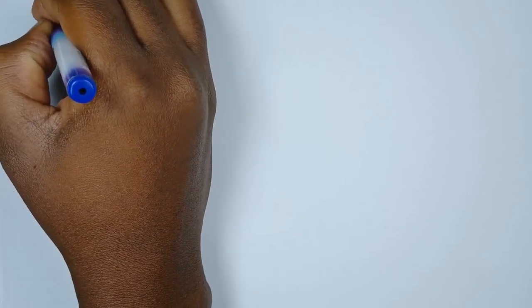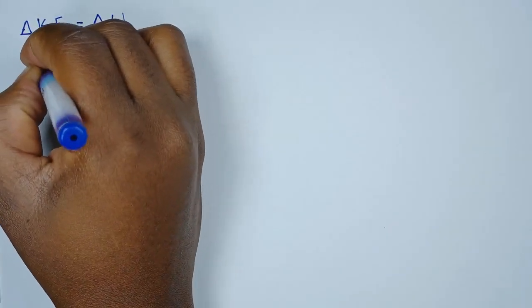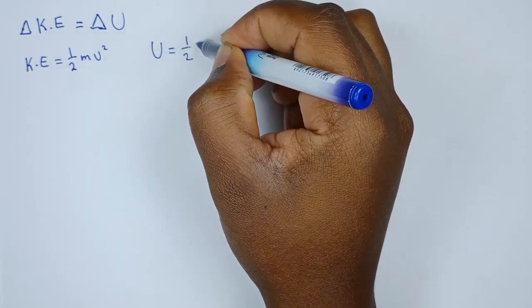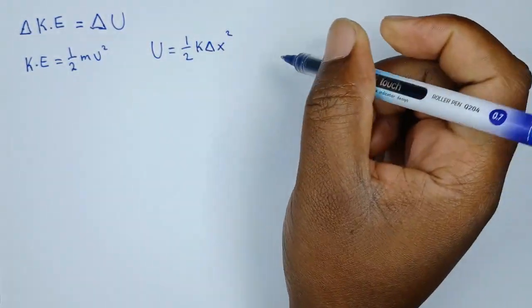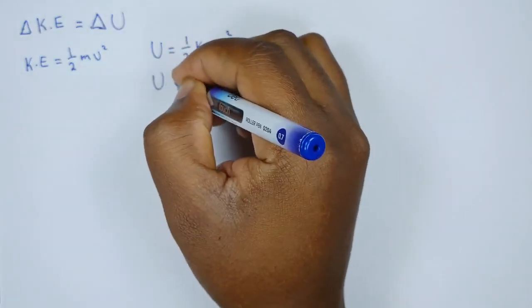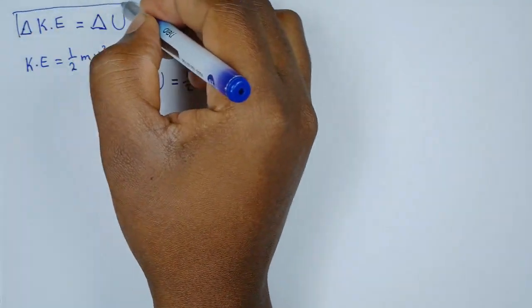To calculate the amplitude, we use conservation of kinetic energy and elastic potential energy. The change in kinetic energy equals the change in elastic potential energy. Kinetic energy is given by ½mv², and elastic potential energy is given by ½k(Δx)². Since the object is displaced from its mean position, that displacement becomes the amplitude — the maximum displacement. So the elastic potential energy equals ½k*A².